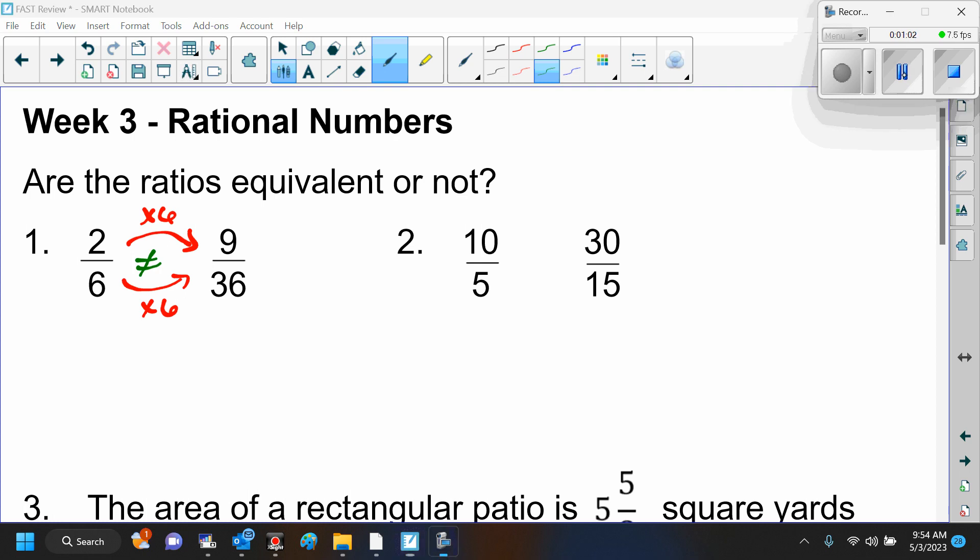If you can multiply by the same thing in the numerator and the denominator, then you're going to have equivalent ratios. There's another way that you can decide if the ratios are equivalent. You can cross multiply, and if your cross products are equivalent, then the ratios are equivalent. If you cross multiply and your cross products are not equivalent, then the ratios are not equivalent.